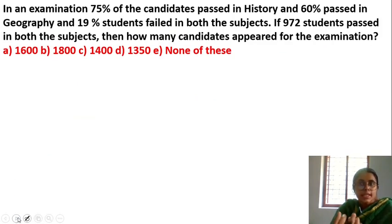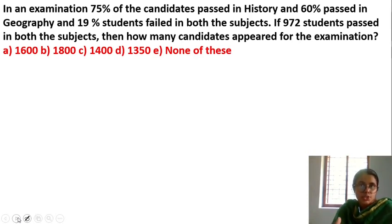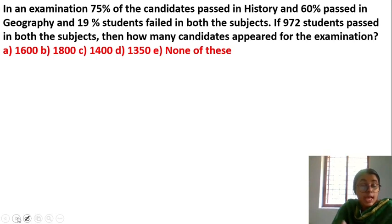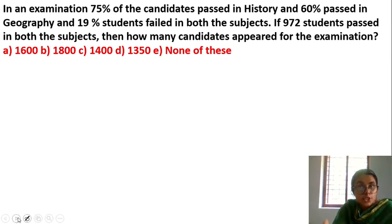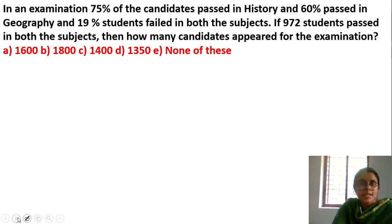In an examination, 75% of the candidates passed in history and 60% passed in geography. 19% of students failed in both subjects. If 972 students passed in both subjects, how many candidates appeared for the examination?